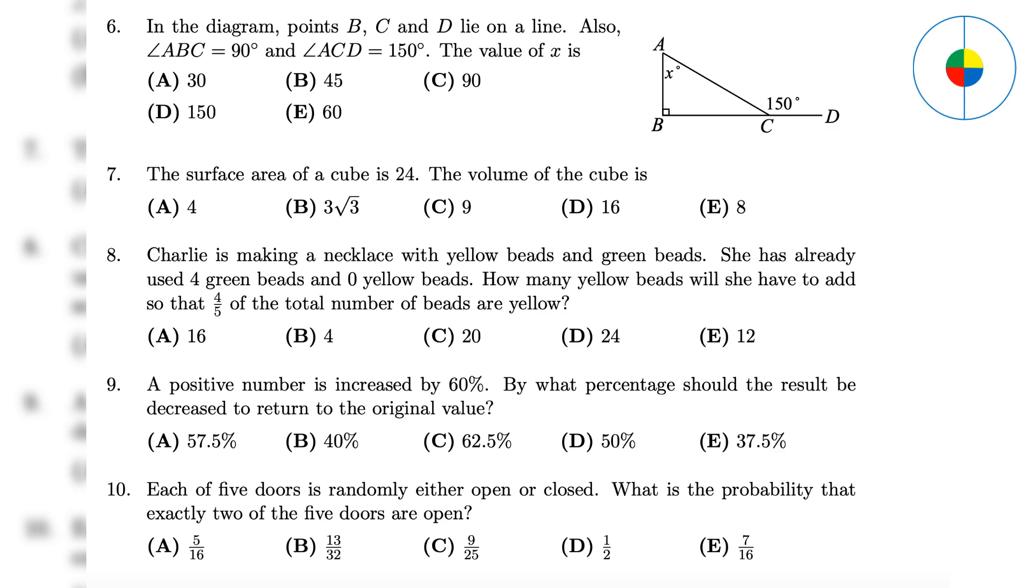Question 10: This is simple probability. The total combinations are 32. There are 10 combinations for exactly two opening doors. 10 divided by 32, the answer is A.